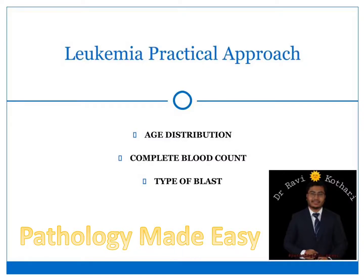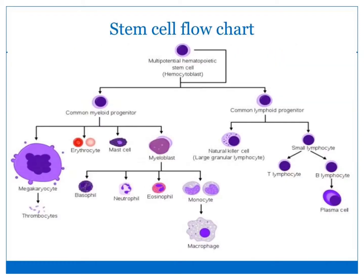Hello everyone, I hope you all are doing great. After a very long break, I am back with Pathology Made Easy. In today's video I will discuss leukemia with a practical approach. For that we have to look for the age distribution, complete blood count, and the type of blast. This figure shows the flowchart of stem cell maturation, showing the maturation of myeloid and lymphoid series from the multipotent hematopoietic stem cell.